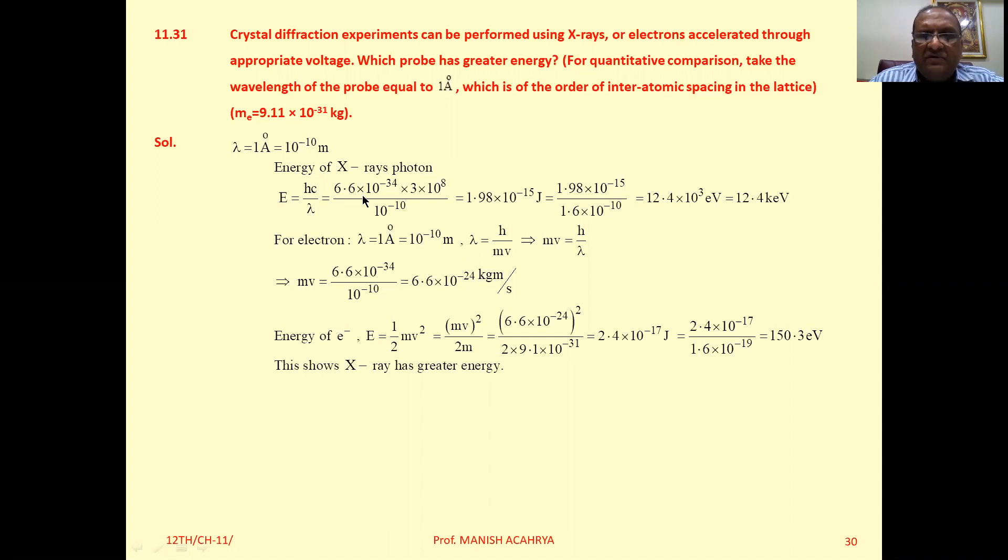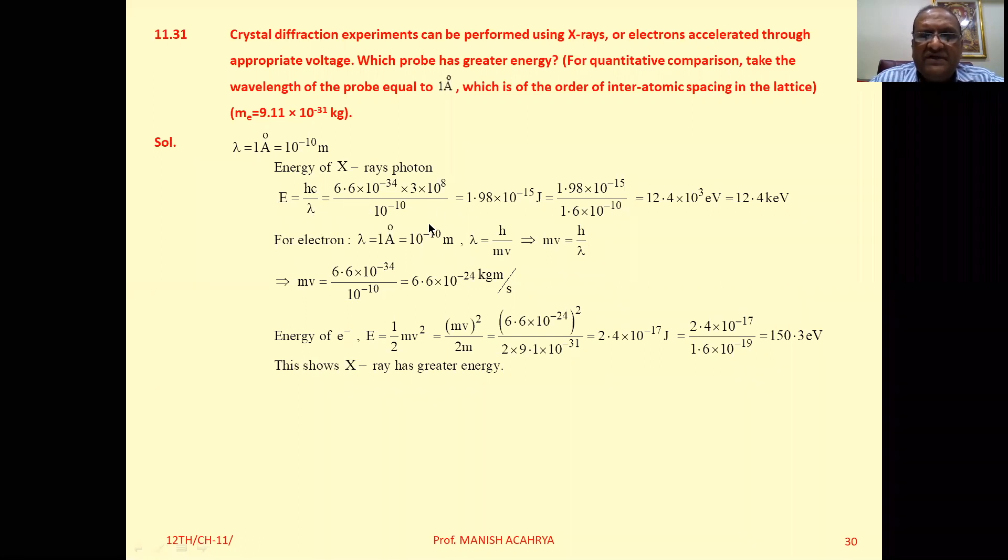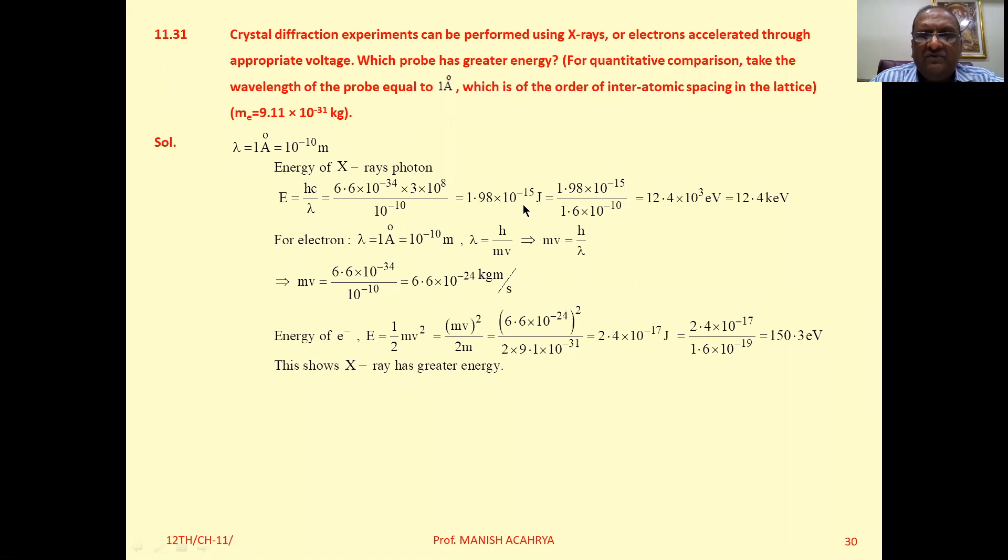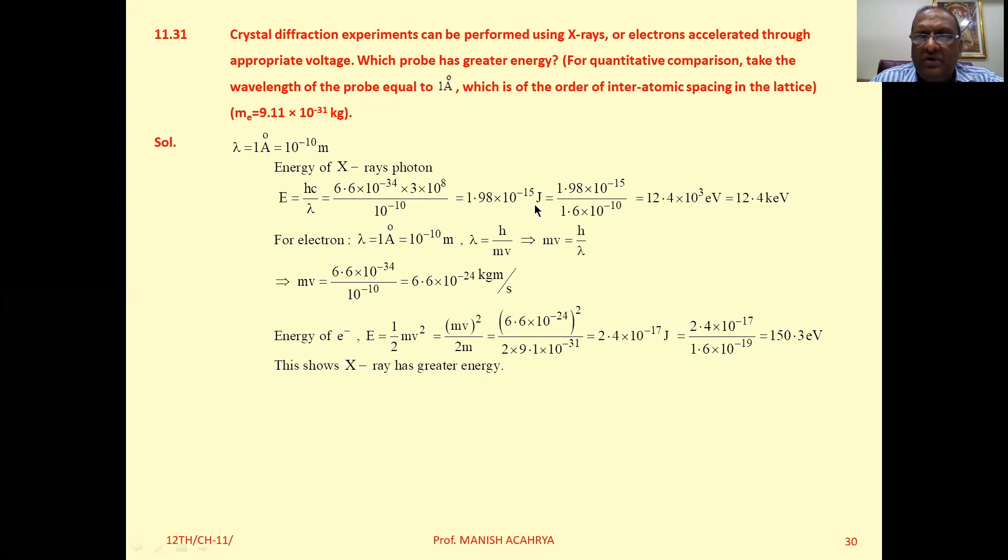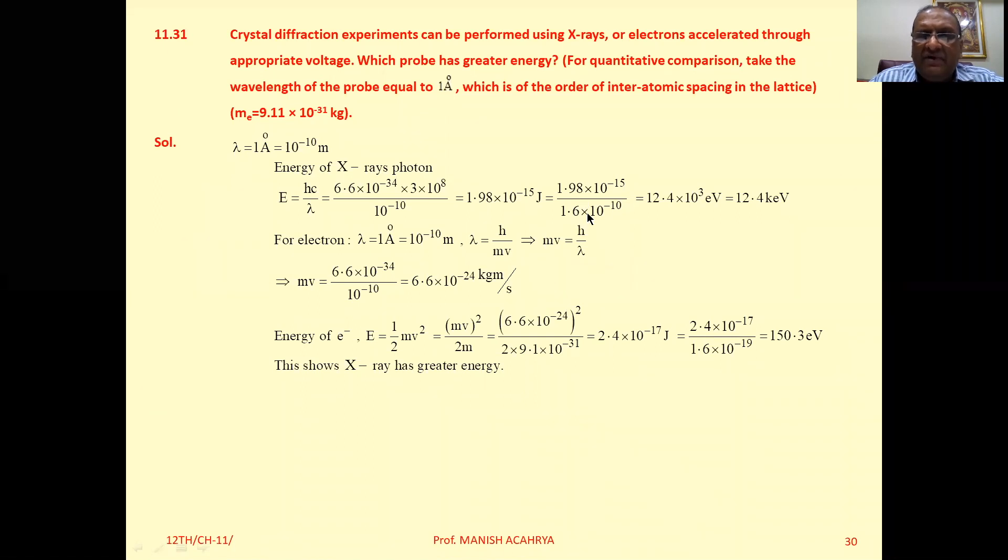Substitute the value of hc and lambda, then solve it. You will get energy in terms of Joule, then divide it by 1.6 into 10 raised to minus 19.